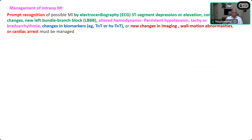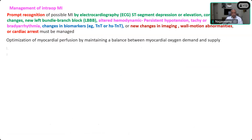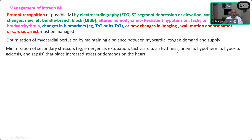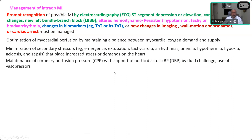Management of intraoperative MI begins with prompt recognition: ST-segment changes on ECG, conduction changes or new left bundle branch block, altered hemodynamics such as persistent hypotension, tachycardia or bradyarrhythmia, changes in biomarkers, new wall motion abnormalities on imaging, or even cardiac arrest due to acute infarction. Optimization of myocardial perfusion by maintaining balance between oxygen supply and demand is critical to prevent further enlargement of the infarction. Minimize secondary stressors such as emergence, extubation, tachycardia, arrhythmia, hypothermia, hypoxia, and acidosis. Maintenance of coronary perfusion pressure via adequate aortic diastolic blood pressure using fluid challenge, vasopressors, or an intra-aortic balloon pump is necessary.